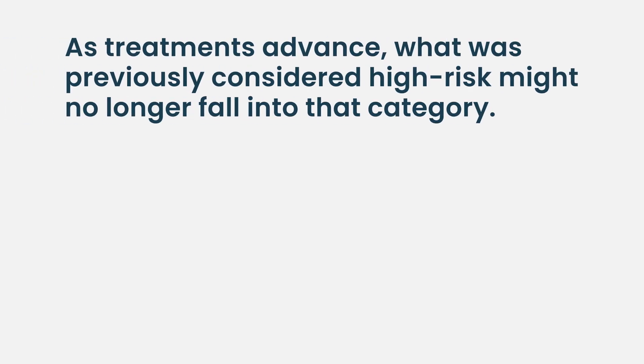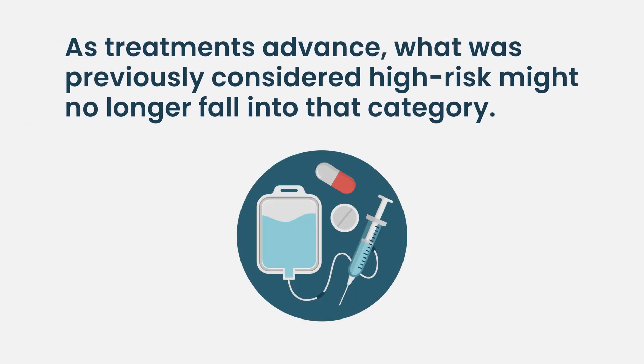The reason why these things are in flux is that what is prognostic for outcome is dependent on what treatment is available. As treatment improves and begins to neutralize the bad effect of certain abnormalities — whether that's genetics, high LDH, extramedullary disease, or plasma cell leukemia — what is prognostically significant is going to change. So it should be expected over time that there will be fluidity in what is a high-risk abnormality as treatment continues to improve.